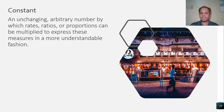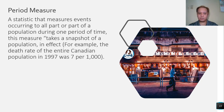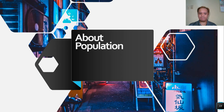Constant — an unchanging arbitrary number by which rates, ratios, or proportions can be multiplied to express these measures in a more understandable fashion. Cohort measure — a statistic measuring events occurring to a cohort, a group of people sharing a common demographic experience observed through time. The most commonly used cohort is the birth cohort — people born in the same year or period. Other cohorts include marriage cohorts and school class cohorts. Period measure — a statistic measuring events occurring to all or part of a population during one period of time, taking a snapshot of the population. For example, the death rate of the entire Canadian population in 1997 was 7 per 1,000.